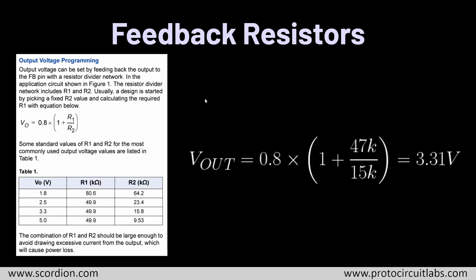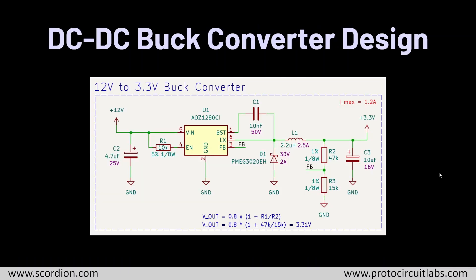Here is the feedback resistor calculation for the output voltage formula, and they also recommend some resistor values for common output voltages. They recommend certain values for the 3.3V output, but they are not easy-to-find values. So I selected different resistor values — 48k and 15k — which gives us 3.31V output voltage.